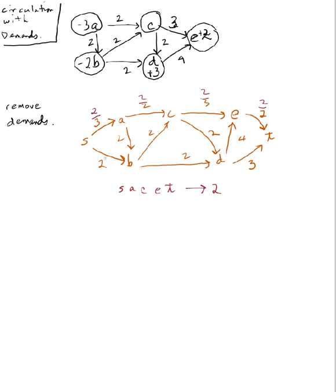Okay, my next augmenting path is, let's say, S, B, D, T. Okay, capacities are two, two, and three. So that'll give me a bottleneck of two.